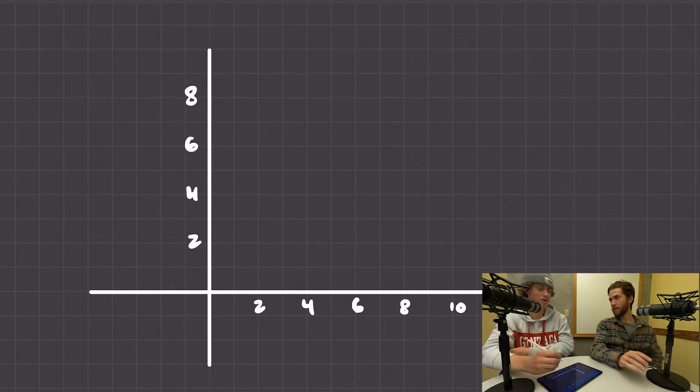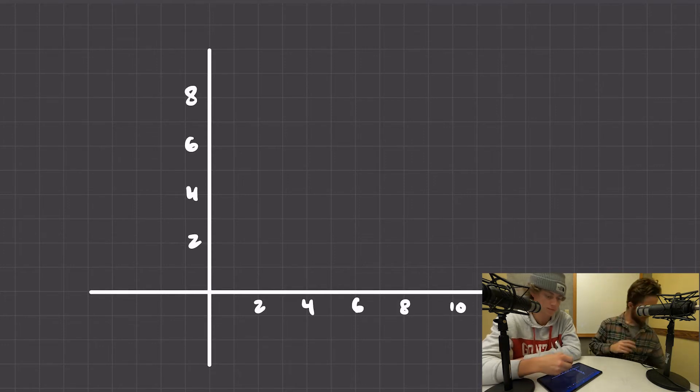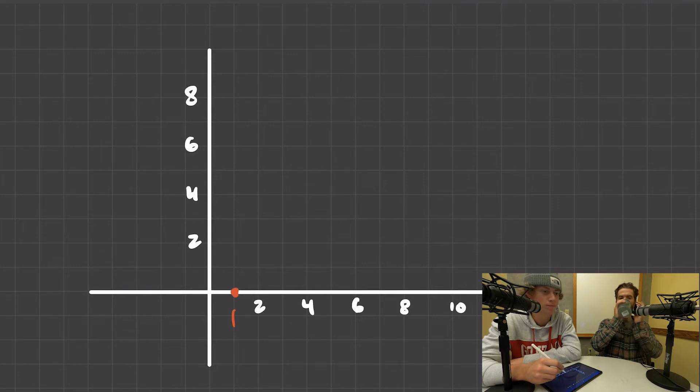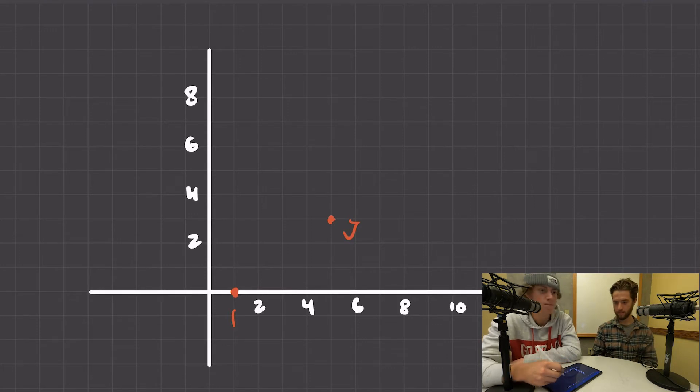Okay, so over one, and then you just stay there. So exactly, first point I, and then second point J, which is five, which is over six.